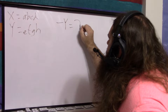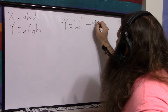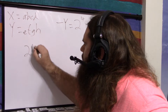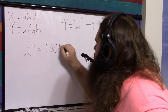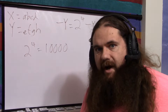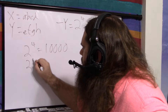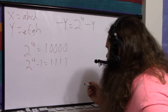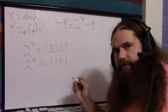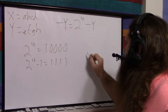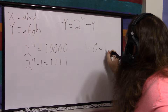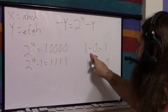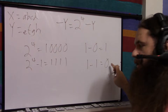Negative Y equals 2 to the 4 minus Y. Since we're using four bits, it's 2 to the 4. What is 2 to the 4? It's one with four zeros. You'll notice that's five bits. 2 to the 4 minus 1 is four ones — so that's four bits. Now why do we care? If you want to flip bits — turn a 1 into a 0 and a 0 into a 1 — 1 minus 0 equals 1, and 1 minus 1 equals 0. So if you take 1 and subtract your bit, you get the other bit.